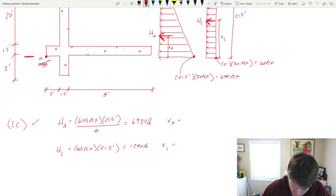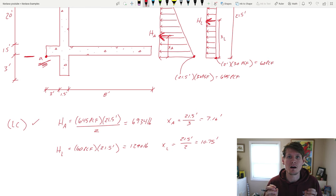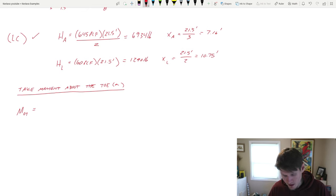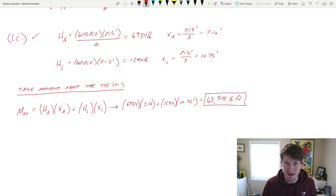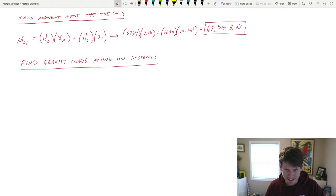Now what about our moment arms for both of these forces? Well X sub A is just one third the height of the triangle. And that gets us 7.16 feet. And then for the rectangular distribution it's just half the height of that loading. Now we can actually find the overturning moment demand basically on our structure. So let's solve that now. MOT, that's what I like to call it, our overturning moment, but you can call it whatever you'd like, is equal to the following. Plug everything in for that, we get the following. All right, 63,515 pound feet for our overturning demand.